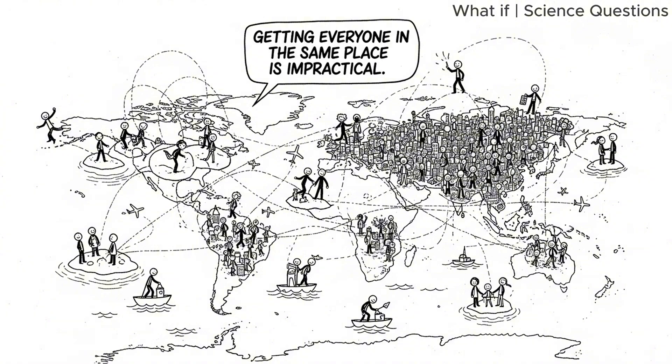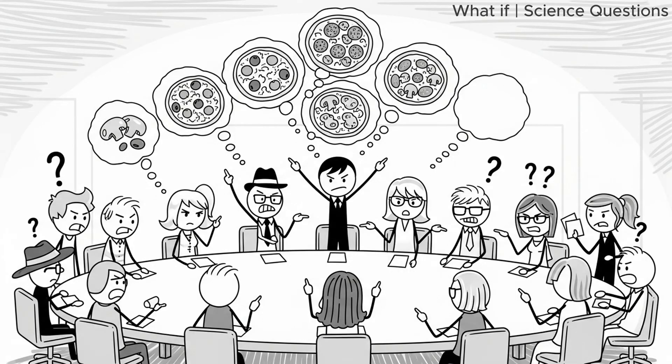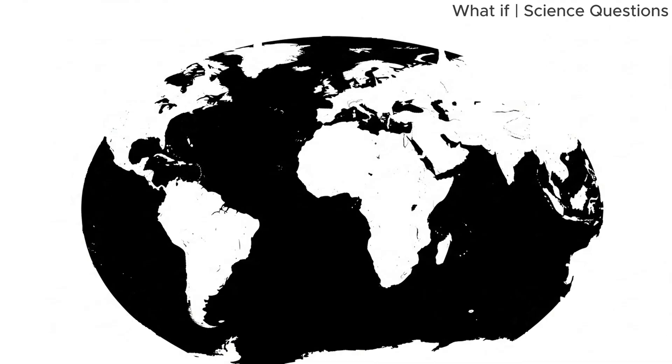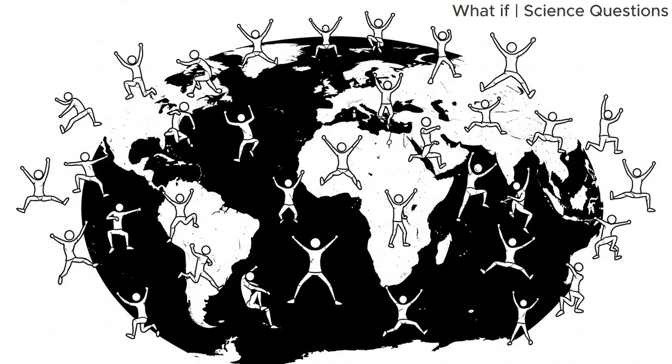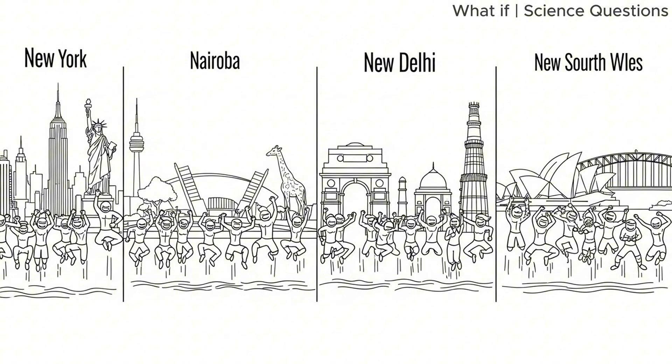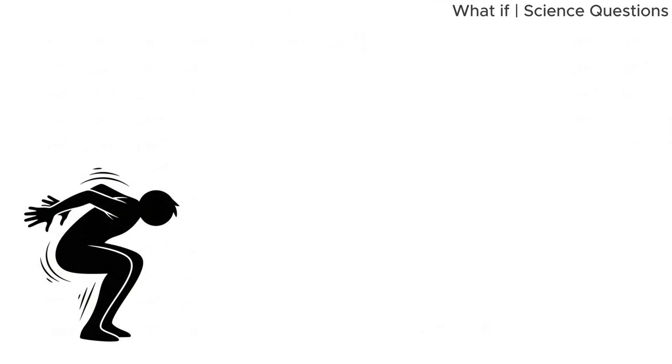Getting everyone in the same place is impractical. We can't even agree on pizza toppings. So we'll assume that instead of gathering in one spot, everyone simply jumps at the same instant, synchronized, perfectly timed from wherever they are on Earth. That means people in New York, Nairobi, New Delhi, and New South Wales all jump in unison.